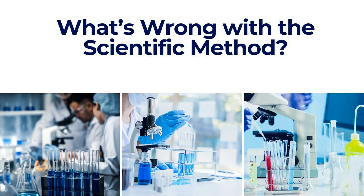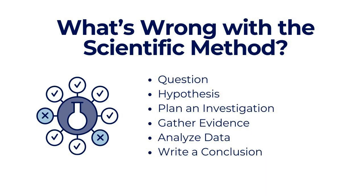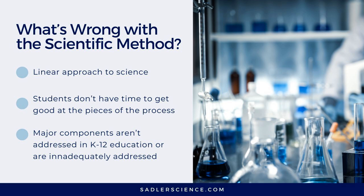One of the questions I get asked most is how the science and engineering practices differ from the scientific method. In the past, we relied heavily on teaching the scientific method in our science classes. I'll spend a little bit more time going over what's wrong with the scientific method in another video, but I'll give you a brief overview here. When I taught the scientific method, we asked students to start with a question, create a hypothesis, and conduct an investigation to gather evidence. Then the students were asked to analyze the data and draw a conclusion about the accuracy of their original hypothesis. Unfortunately, this approach gives students the mistaken impression that science follows a linear pathway, and students were asked to look at all of those pieces at once, so they never really got good at any of the steps.